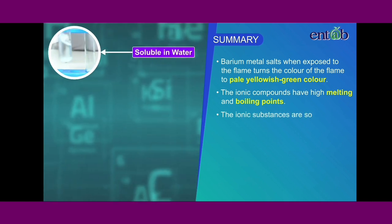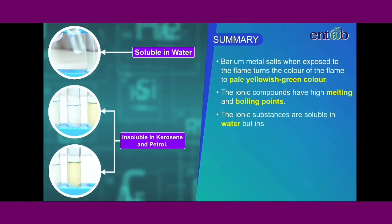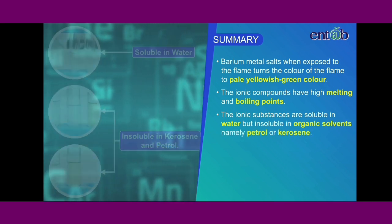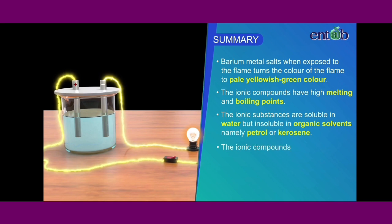Ionic substances are soluble in water but insoluble in organic solvents, namely petrol and kerosene. The ionic compounds are good conductors of electricity. The ionic compounds conduct electricity when in an aqueous solution and when in the molten state.